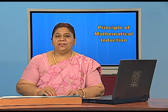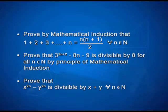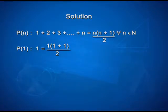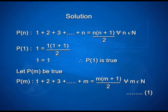Let us see the solution of one of those questions. First one was: 1 plus 2 plus 3 plus ... plus n equals n(n+1)/2 for every n belonging to natural numbers. First, we check for n=1: 1 equals 1×(1+1)/2, which gives 1 equals 1. Therefore p(1) is true. Now p(m) can be written as 1 plus 2 plus 3 plus ... plus m equals m(m+1)/2 for every m belonging to natural numbers. Take this statement as equation 1.